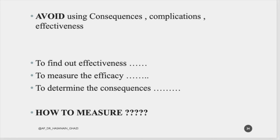Avoid using vague words like 'consequences,' 'complications,' or 'effectiveness' in the title, because in your methods and results you must clearly explain how these are measured — what is the definition of consequences or complications, and is effectiveness measurable by questionnaire or by some specific tool or equipment?